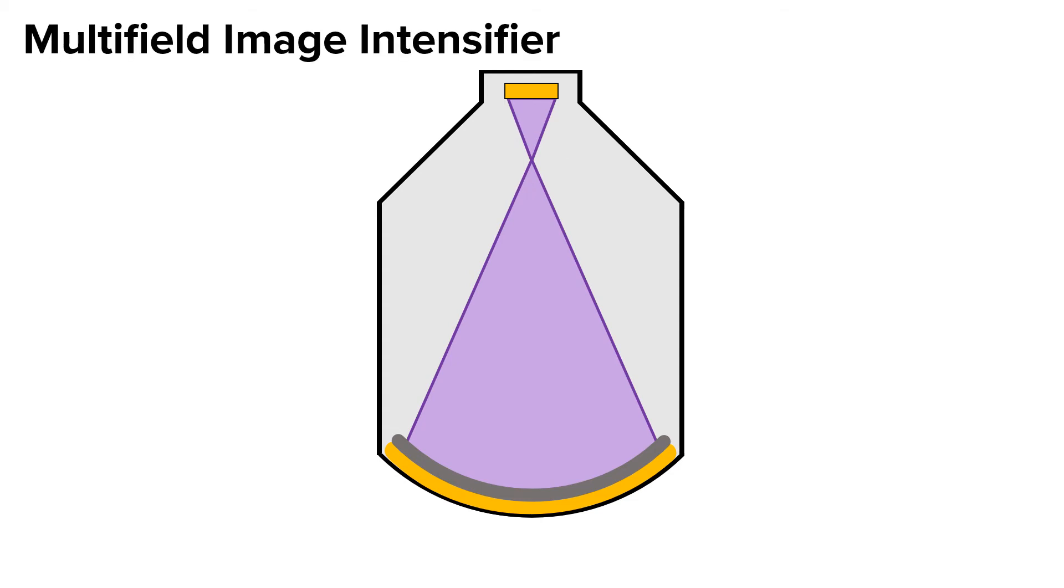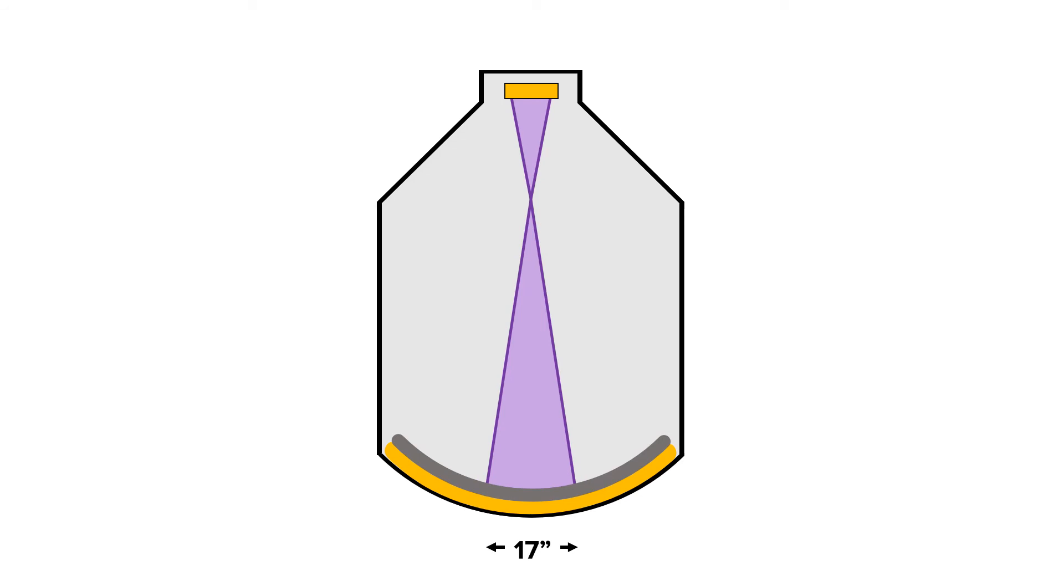A multi-field image intensifier allows you to magnify an image. Magnification can be accomplished by changing the size of the input phosphor. Input phosphors usually come in 12, 17, and 25-centimeter sizes. Let's see what happens when we go from a 25-centimeter input phosphor to a 17-centimeter input phosphor. Now watch it again, but this time focus on the focal spot.